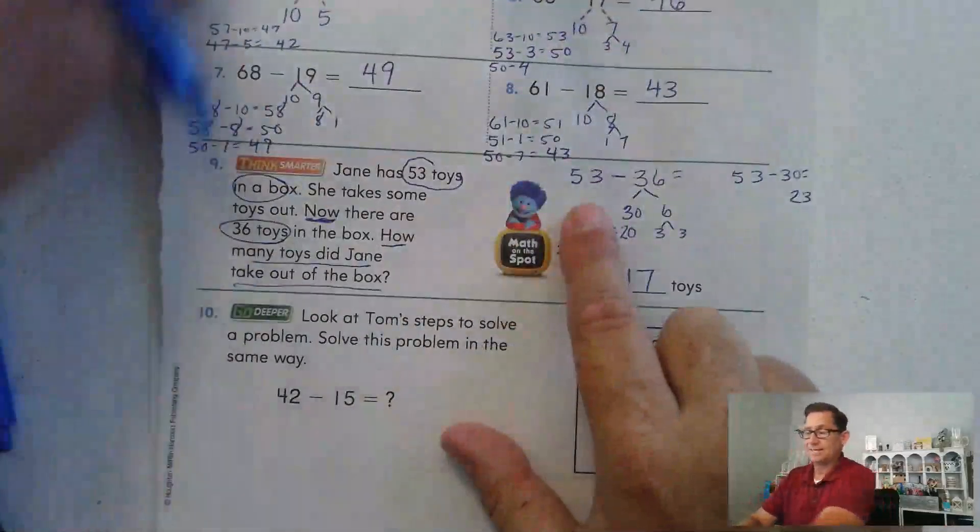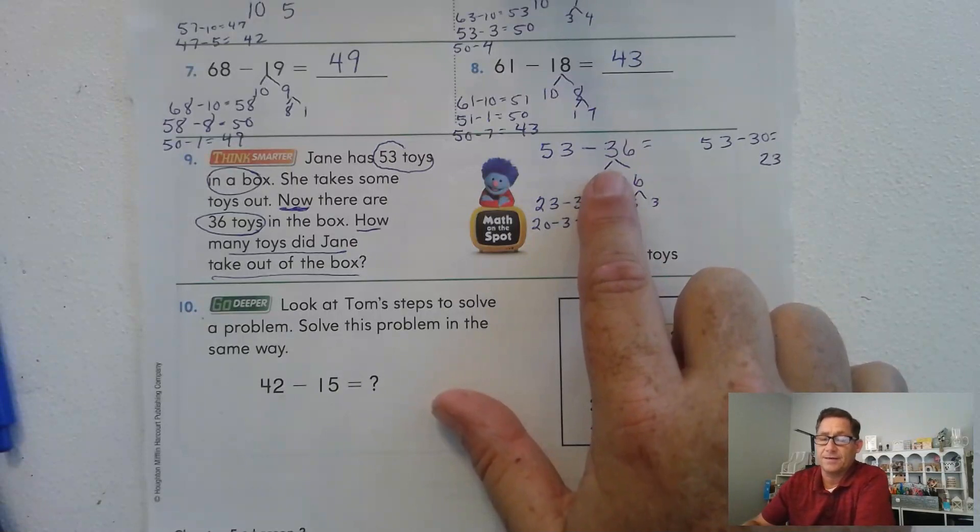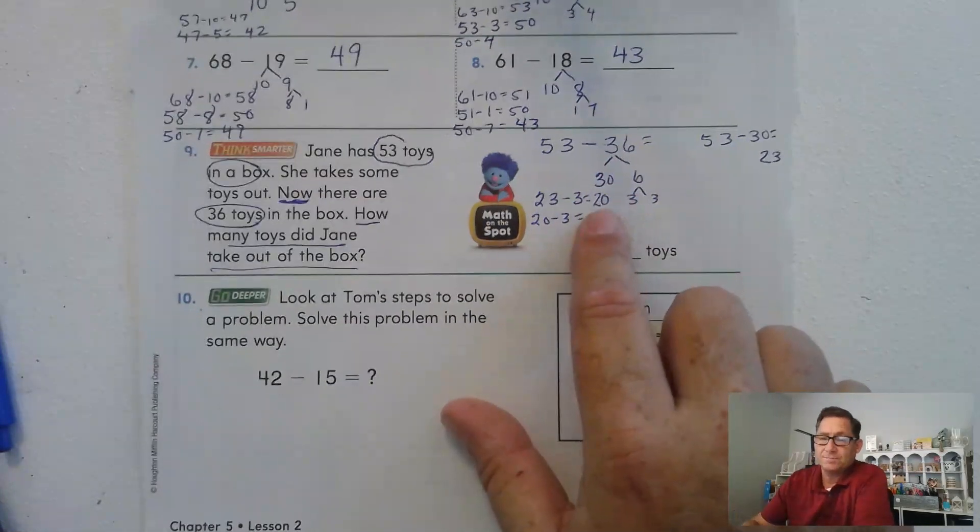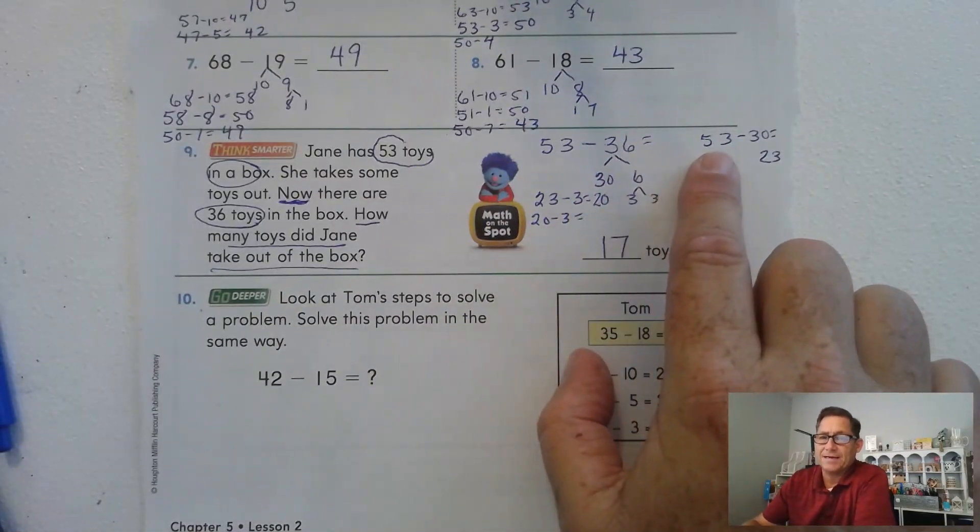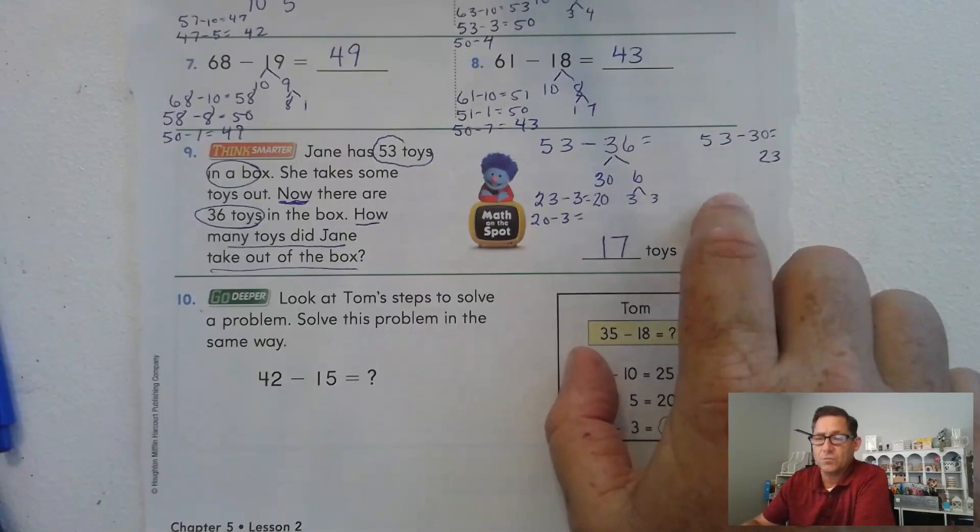Could you have broken the 36 into 10s first? Like 10 plus 10 plus 10 plus 6? You could. But I think you should be able to back up 53 by 10s this way: 53, 43, 33, 23.